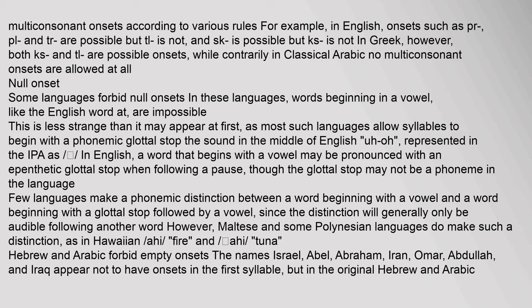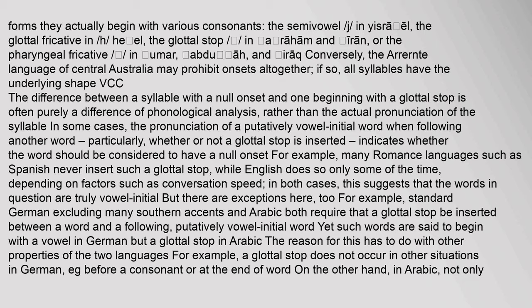Maltese and some Polynesian languages do make such a distinction, as in Hawaiian 'ahi' (fire) versus 'ahi' (tuna). Hebrew and Arabic forbid empty onsets. The names Israel, Abel, Abraham, Iran, Omar, Abdullah, and Iraq appear not to have onsets in the first syllable, but in the original Hebrew and Arabic forms they actually begin with various consonants: the semivowel 'j' in Yisrael, the glottal fricative 'h' in Hebel, the glottal stop in Abraham and Iran, or the pharyngeal fricative in Umar, Abdullah, and Iraq.